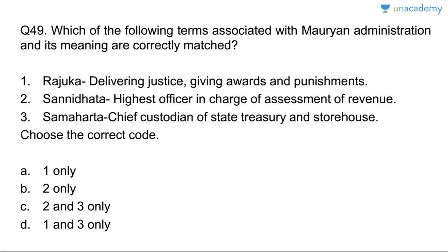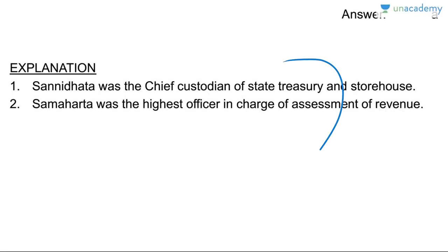Question forty-nine: terms associated with Mauryan administration. Rajuka — delivering justice, giving awards and punishments — correct. Sannidhatri is the chief custodian of the state treasury and storehouse — correct. Samaharta is the highest officer in charge of assessment of revenue — correct. But in the question the options for Sannidhatri and Samaharta were reversed. Answer is A, one only.